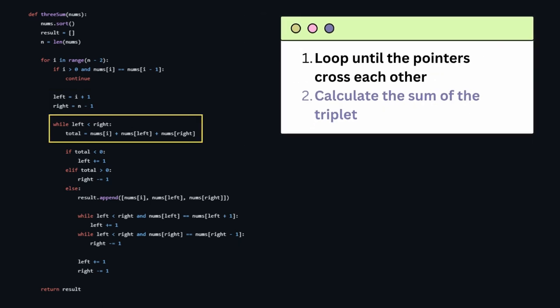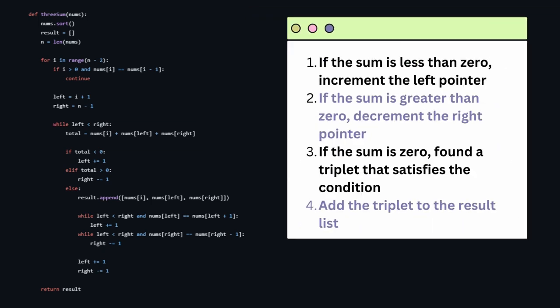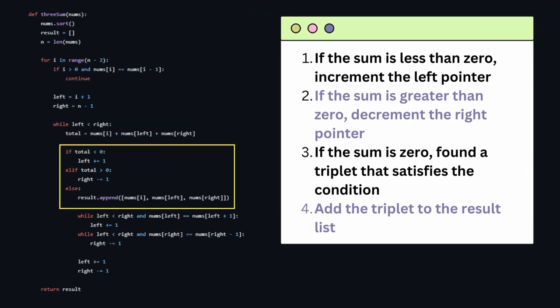The main working code will be a loop that stops when the pointers cross each other. We first calculate the sum of the triplet. If the sum is less than zero, increment the left pointer. If the sum is greater than zero, decrement the right pointer. If the sum is zero, then we have found our triplet and add it to the result list.